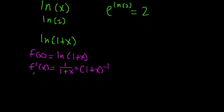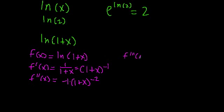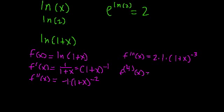Taking the second derivative f double prime of x: we drop the negative 1 exponent, giving negative 1 times 1 plus x to the negative 2. The third derivative f triple prime is negative 2 times negative 1 — the two negatives cancel — so it's 2 times 1 times 1 plus x to the negative 3. The fourth derivative brings the negative 3 down: negative 3 times 2 times 1 times 1 plus x to the negative 4, and so on.